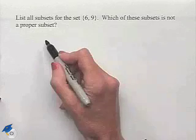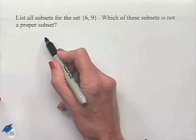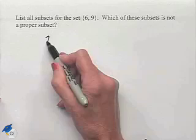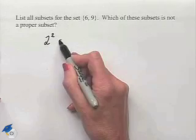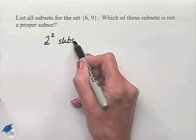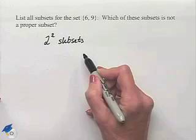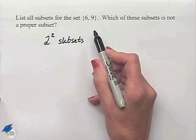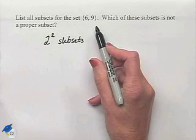The cardinality of this set is going to equal 2, so therefore we'll have 2 squared subsets. And of course 2 squared is equal to 4. Let's do a systematic way of listing the subsets.